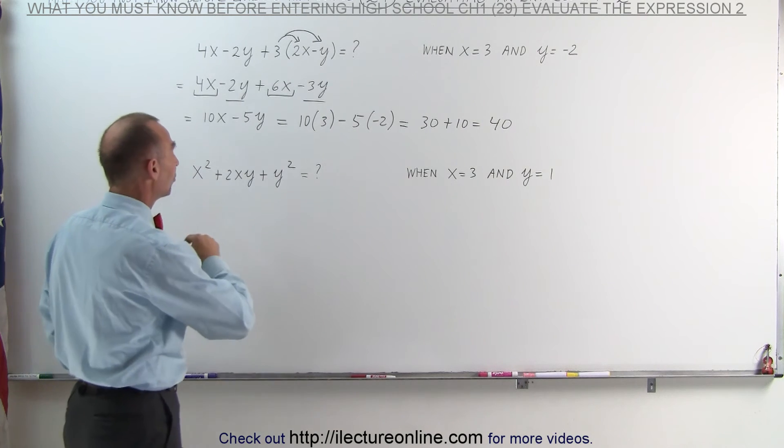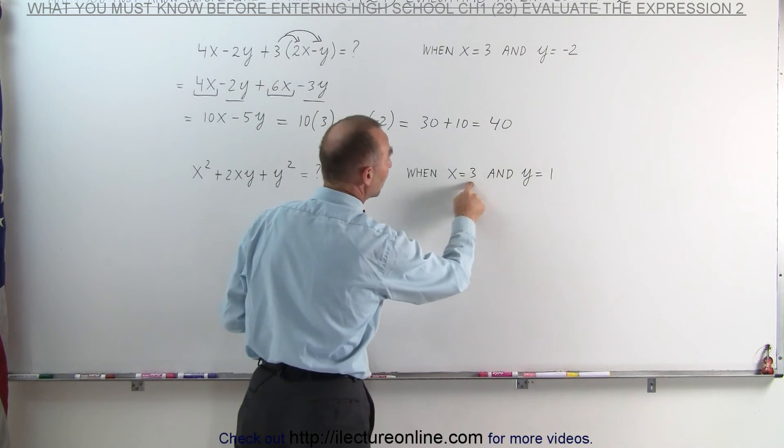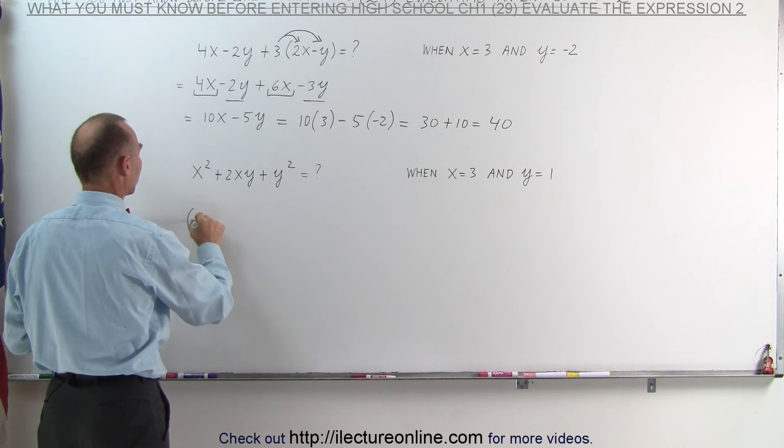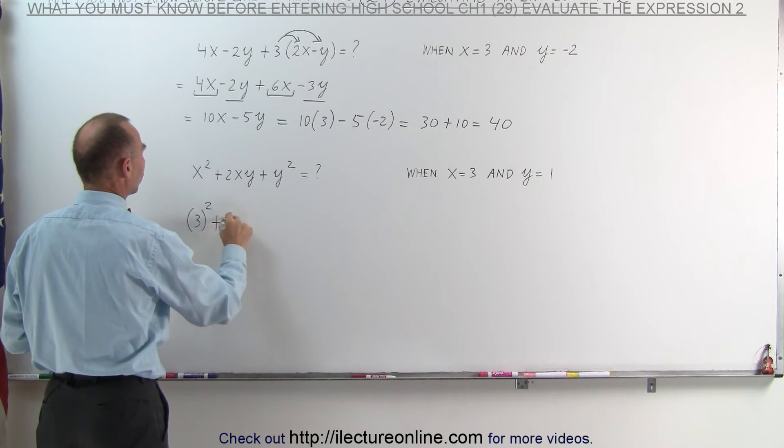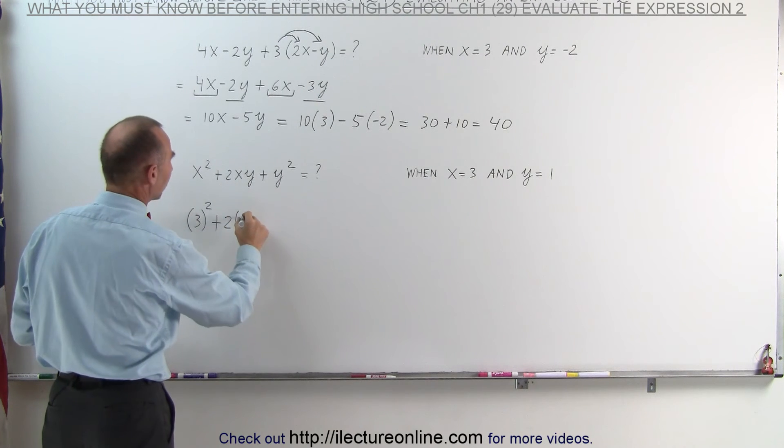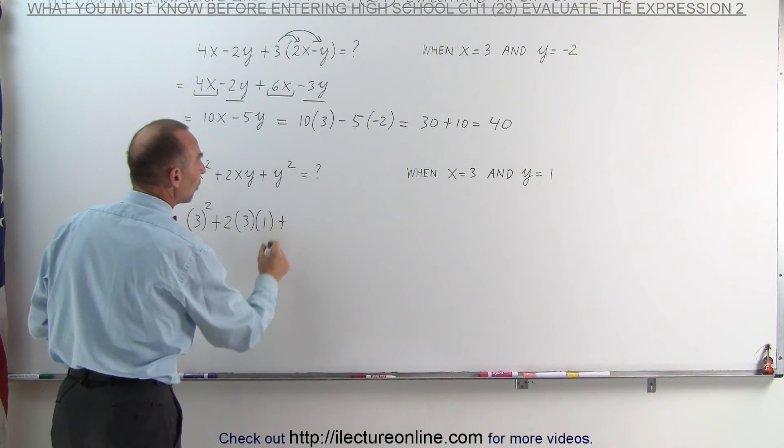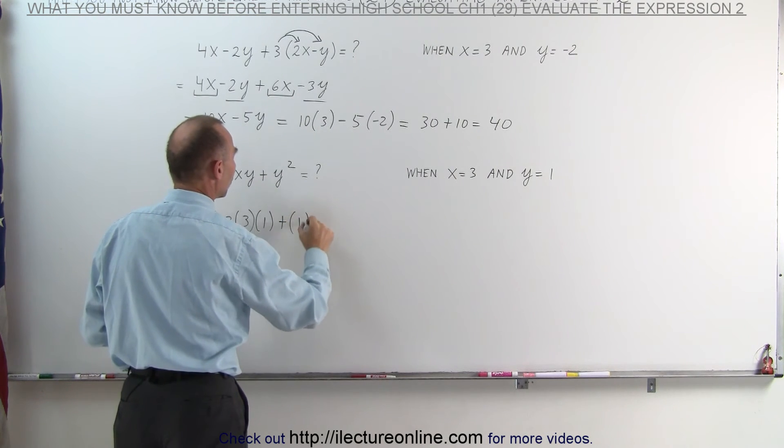So let's go ahead now and substitute. For x we're going to write 3, and for every y we're going to write 1. Here we have x squared, which becomes 3 squared, plus 2 times x, which is 3, and y, which is 1, plus y squared. Y is 1, so this becomes 1 squared.